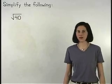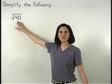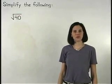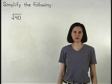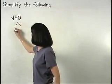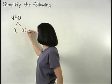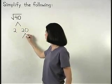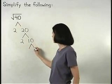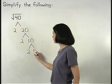To simplify the square root of 40, notice that 40 is not a perfect square. So let's start by setting up a factor tree. 40 factors as 2 times 20, 20 factors as 2 times 10, and 10 factors as 2 times 5.